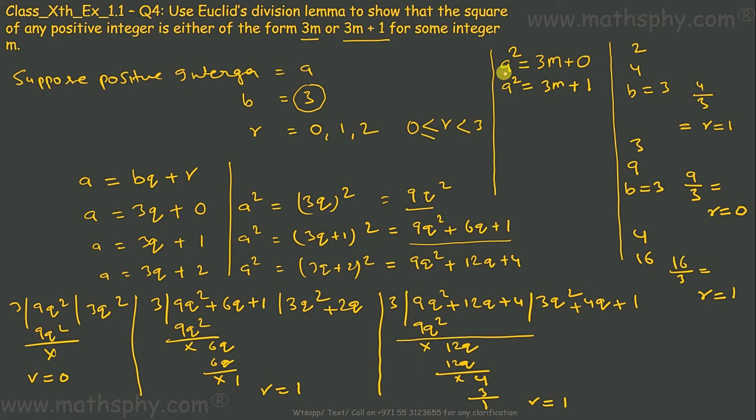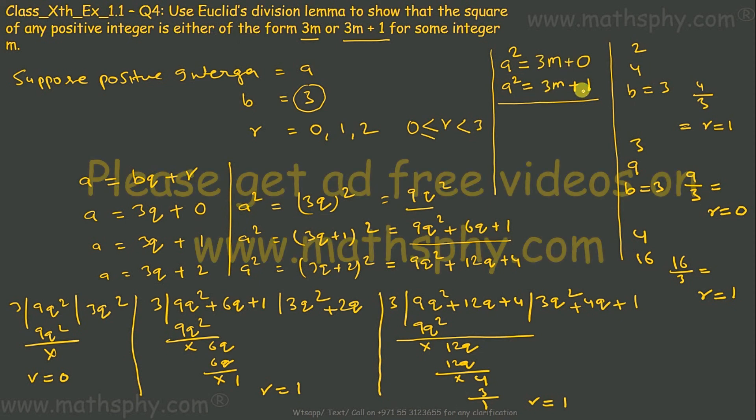So A², which is the square of any positive integer, is equal to 3M plus 0 or 3M plus 1. Here 0 and 1 are the remainders. That's what we have to prove: the square of any positive integer is either of the form 3M or 3M plus 1. Done.